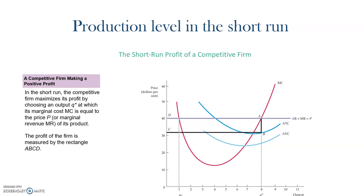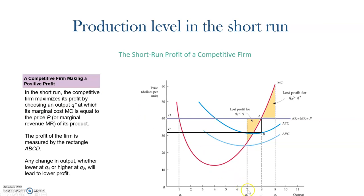What happens if the firm decides to decrease the quantity and produce, for example, 7 units instead of 8? If the firm produces 7 units instead of 8, then the marginal cost will be under the marginal revenue and under the price. So the firm will have less marginal benefits if instead of producing 7 units it produces 1 unit more. The unit 8 of product will still provide additional marginal benefits, and this is expressed by this orange or yellow area. These are the marginal profits that I am getting if I produce 8 units instead of 7.